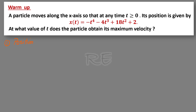First, the position function s of t is equal to x of t. We will write s of t equal to negative t to the fourth minus 4t cubed plus 18t squared plus 2.